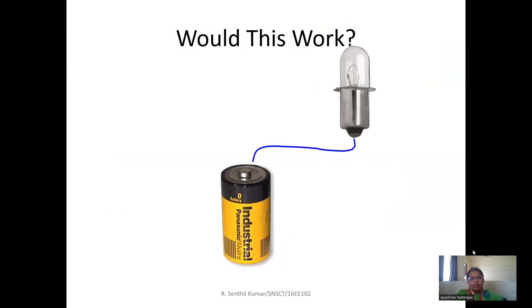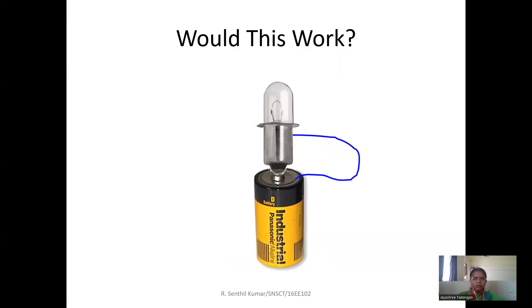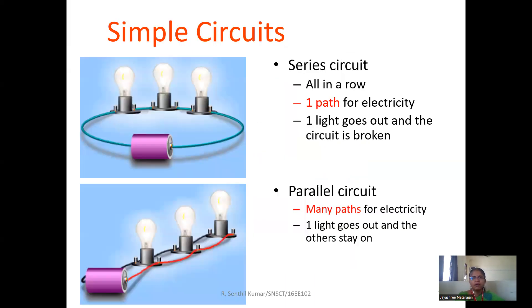Look into this picture. Is it working? Would this work? See there is a battery, then there is a lamp. There is a wire connecting between the battery one terminal and a lamp, one terminal of a lamp. Definitely this won't work. Look into this picture. Here one terminal of a lamp is connected to one side of the battery. Then second terminal of the battery is connected to the lamp. So this works because it is a closed circuit. The current flows between battery and the lamp. So it works.